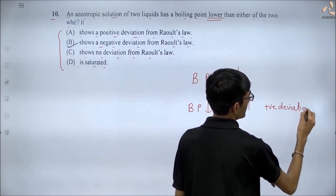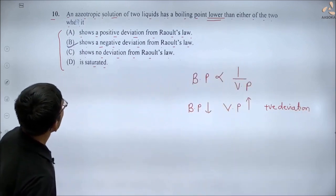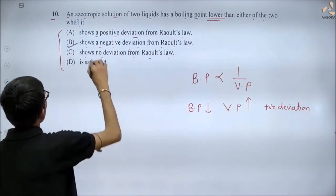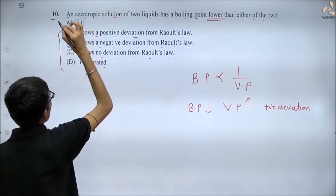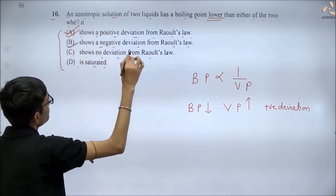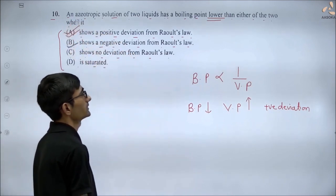कौन सा पार्ट answer होगा? A part — A part is the correct answer: positive deviation from Raoult's law. ठीक है?